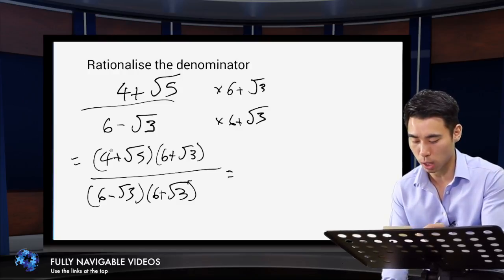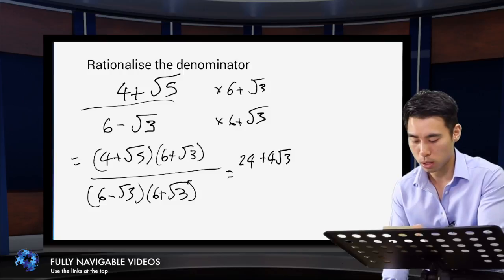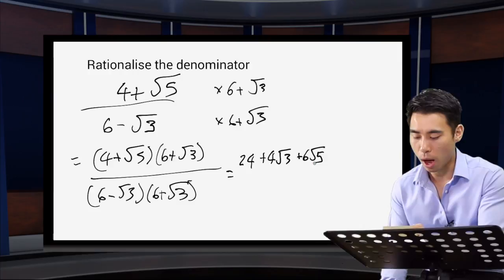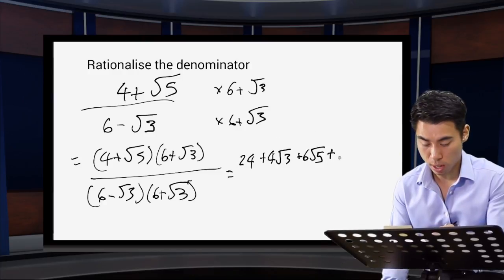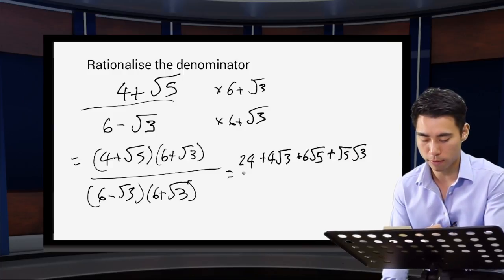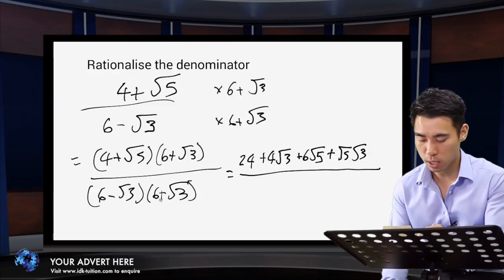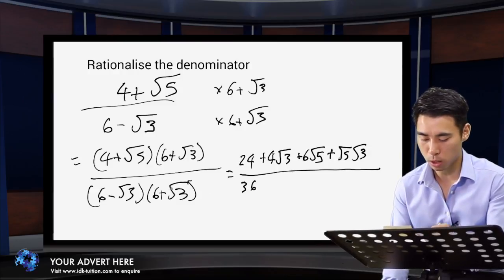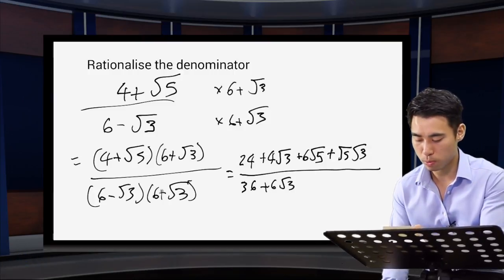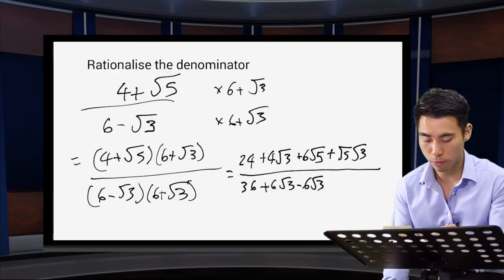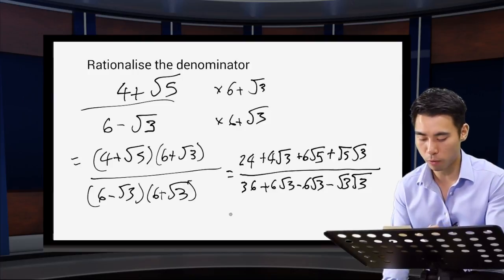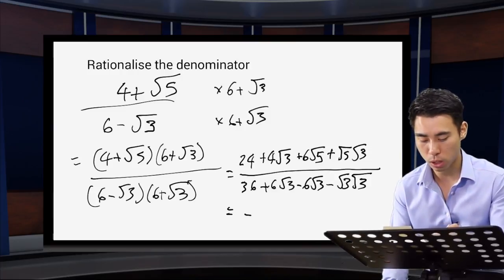Expanding the brackets: 4 times 6 gives 24, 4 times plus root 3 gives plus 4 root 3, plus root 5 times 6 gives plus 6 root 5, and plus root 5 times root 3 gives root 15 using our surd laws. On the bottom: 6 times 6 gives 36, 6 times plus root 3 gives plus 6 root 3, minus root 3 times 6 gives minus 6 root 3, and minus root 3 times plus root 3 gives minus root 3 times root 3. The bottom should become a rational expression with no surds.